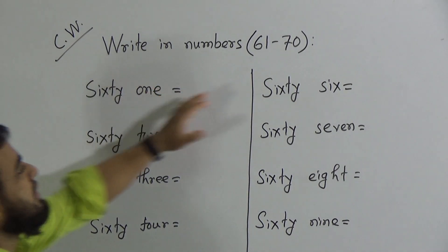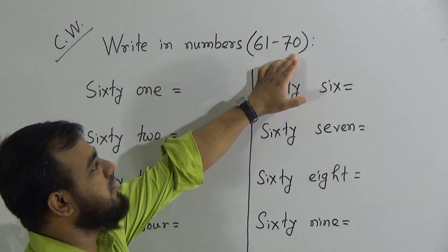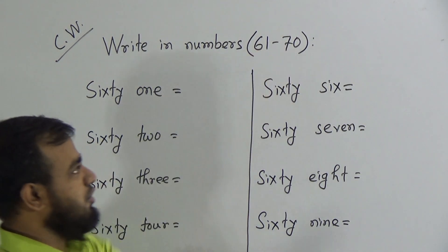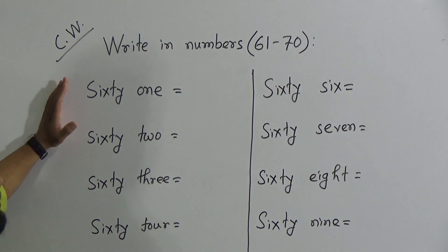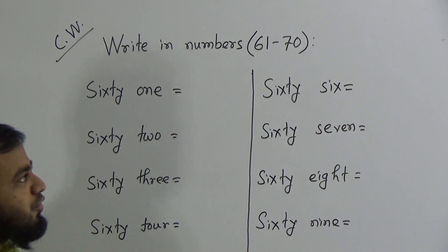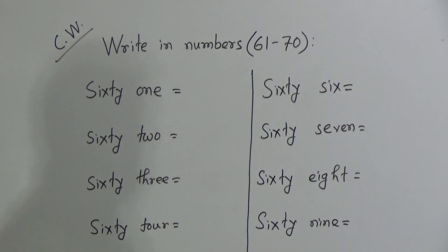We will learn today from 61 to 70 — only 10 numbers, like the previous class. The words will be given and you need to write down only the numbers in the answer paper.